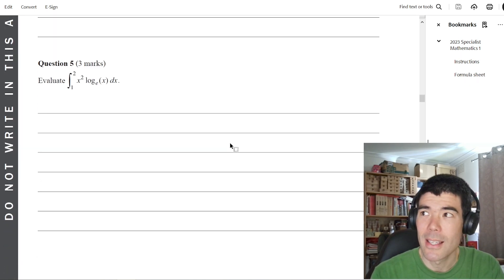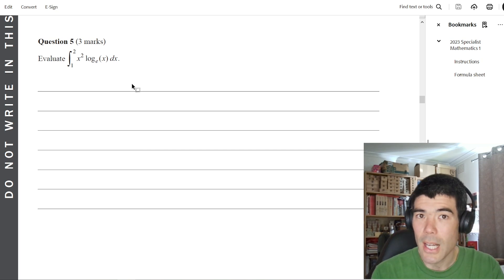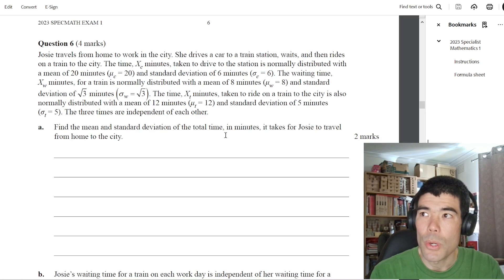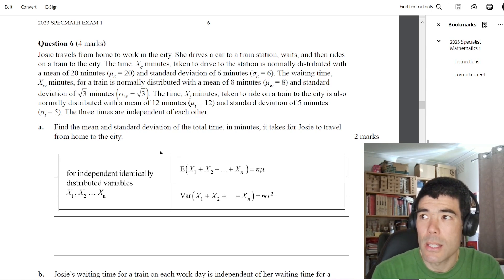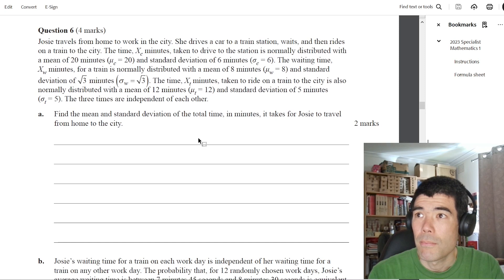Question five, integration by parts. Again, brand new to the study design, 2023, pretty likely to come up again. So practice those integration by parts for exam one. Question six is a probability and stats question. They have to put some probability and stats on exam one. It makes sense to ask this sort of sum of random variables question. Here we have three random variables, but we're just using the formulas from our formula sheet to find the mean and standard deviation. It makes sense to put that on exam one and then leave a hypothesis testing style question for the extended response in exam two.